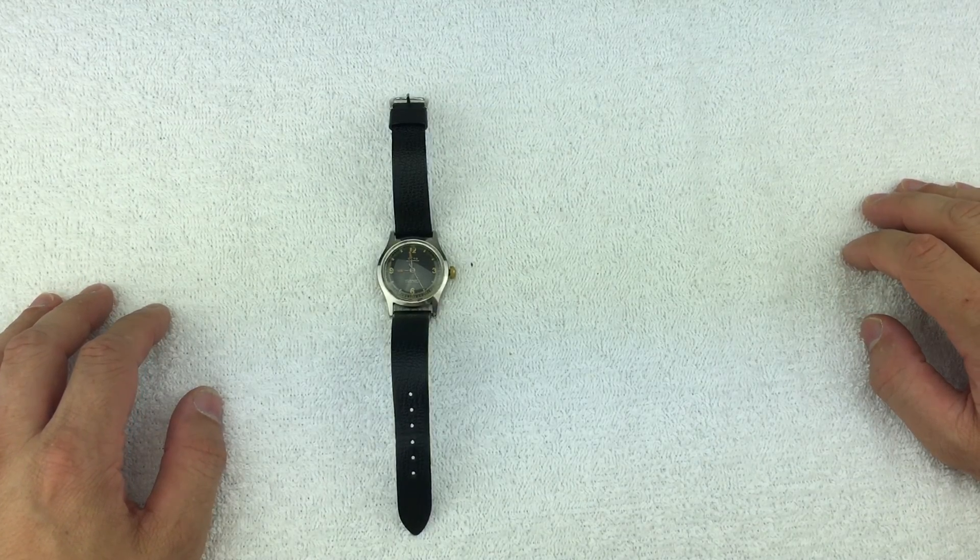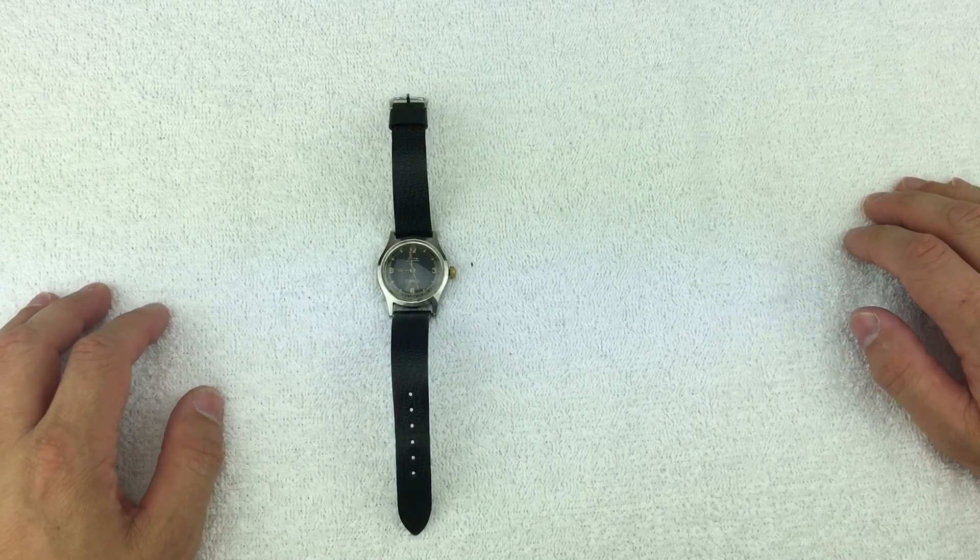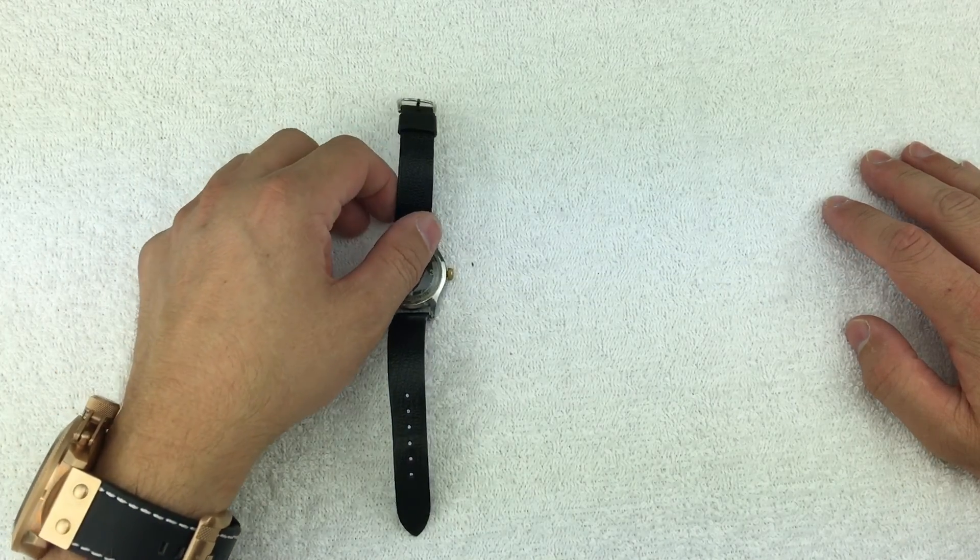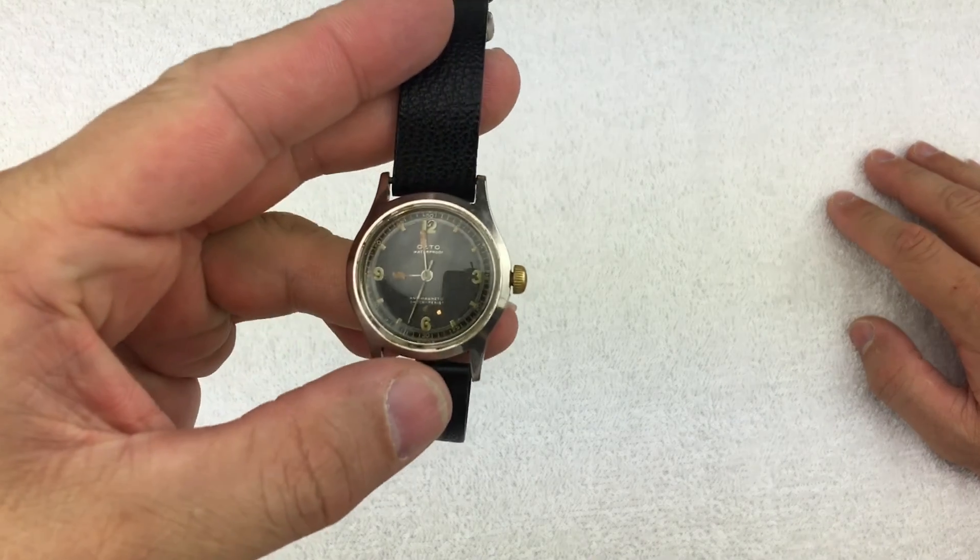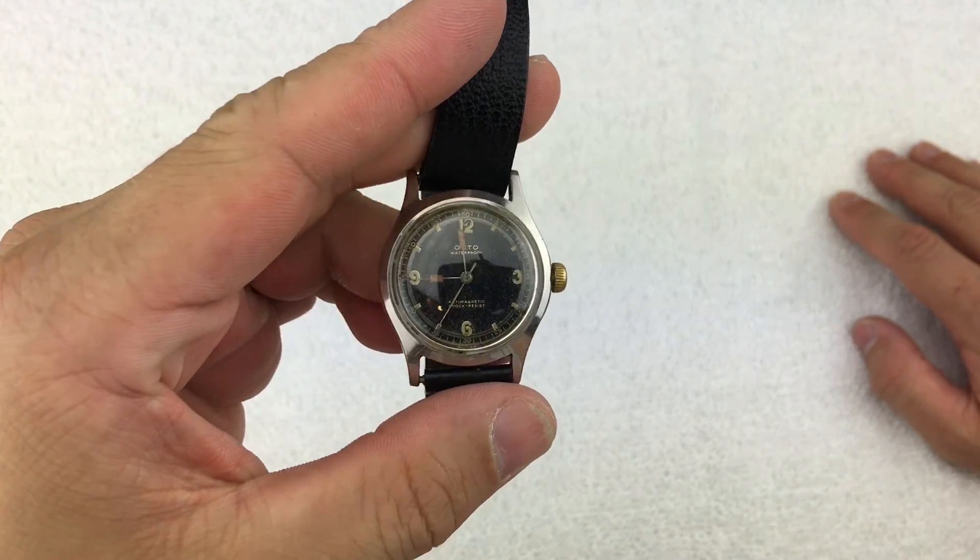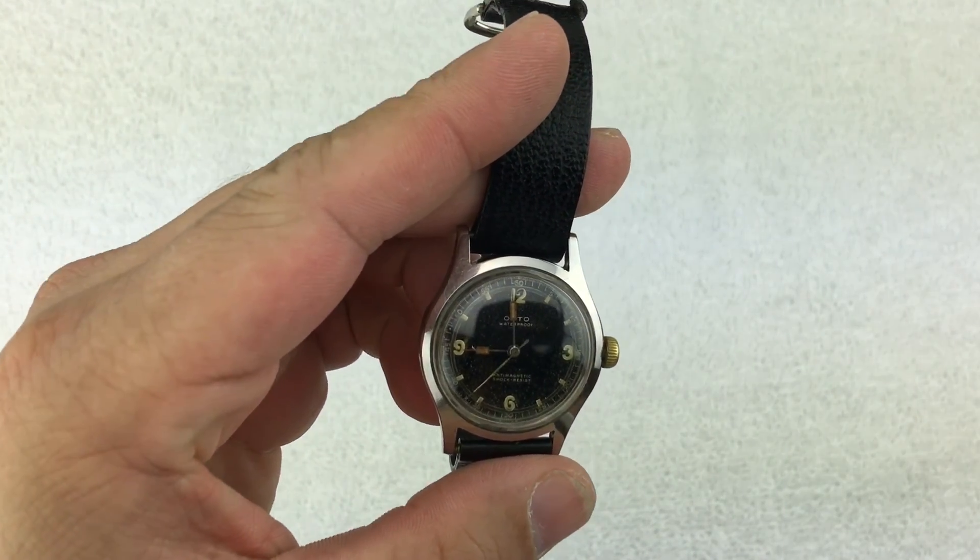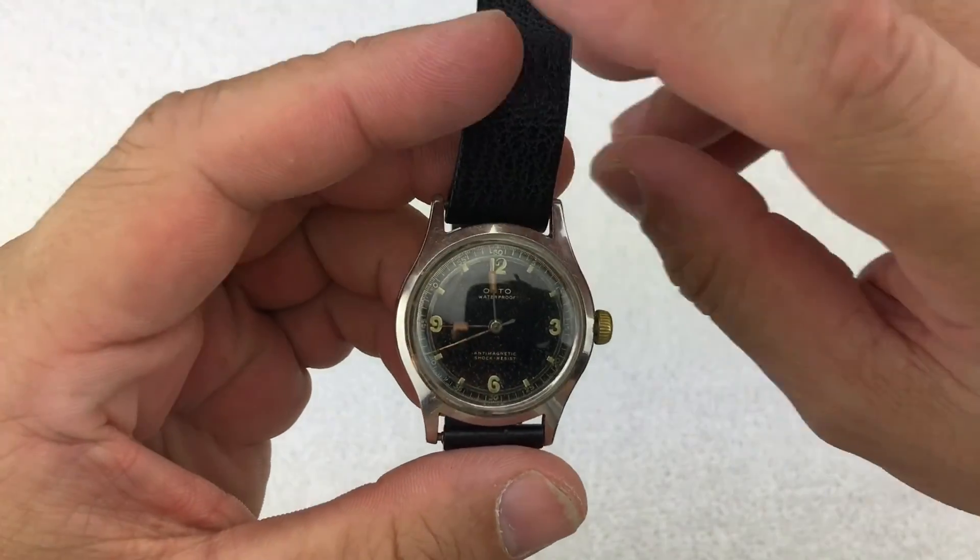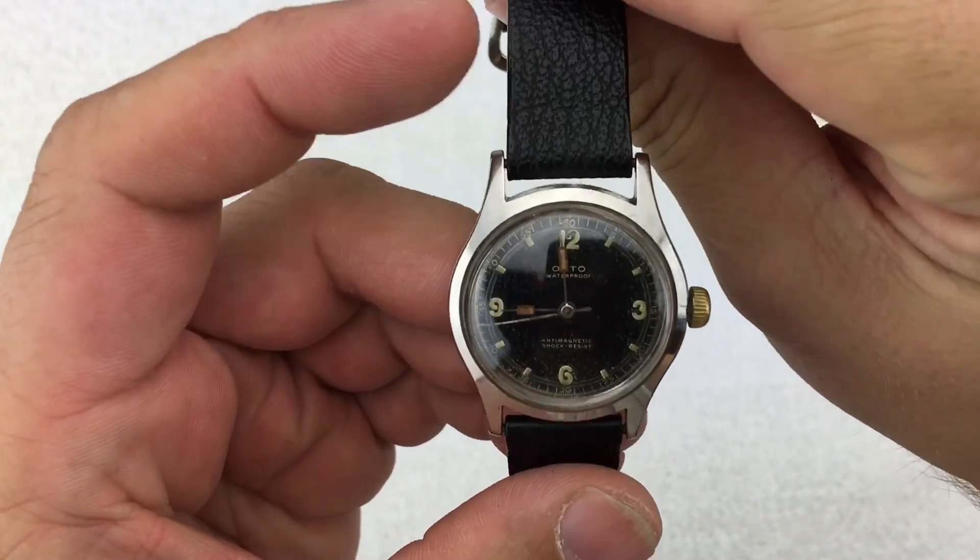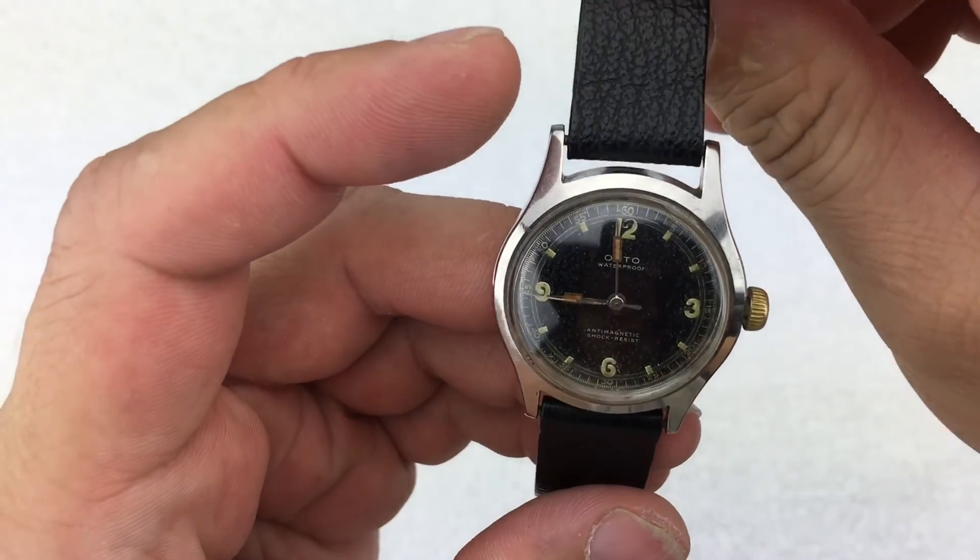Hello everyone, welcome back to another watch review. Today we're going to do a follow-up review on the last vintage watch that came out of that lot I bought. It is a 1940s Octo that says waterproof, anti-magnetic, and shock resistant.